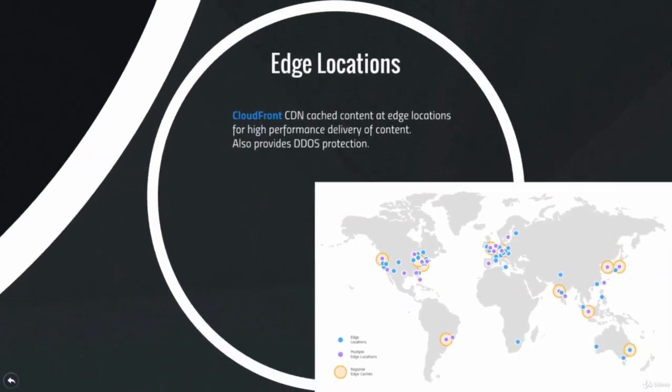There are over 100 edge locations used for the CloudFront content delivery network. CloudFront can cache your popular content, such as images and videos, and distribute that to edge locations across the globe for high-speed, low-latency delivery to your end users no matter where they are located. It also provides great protection against DDoS attacks.